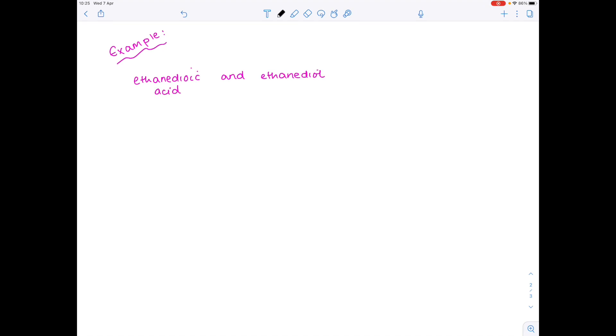So let's start by drawing ethanedioic acid. Eth tells us that we have two carbon atoms. We know it's a carboxylic acid so we need two of those COOH functional groups. So there's ethanedioic acid. Now let's draw ethanediol. Again we have two carbons. We know that we need two OH functional groups. And then just complete the molecule remembering that each carbon atom forms four bonds. Each hydrogen forms one bond. Each oxygen forms two bonds. So there are our reactants.